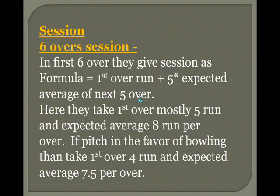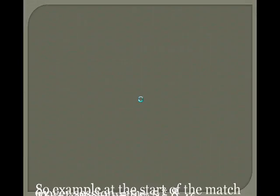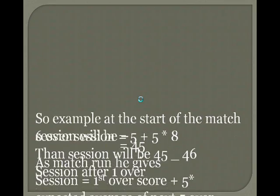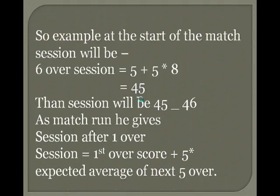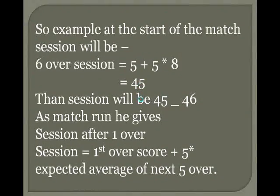If the pitch is in favor of bowling, then he takes 1st over as 4 runs and expected average as 7.5 per over. So at the start of the match, the 6-over session will be 5 plus 5 multiplied by 8 equals 45. Then session will be offered at 45-46.